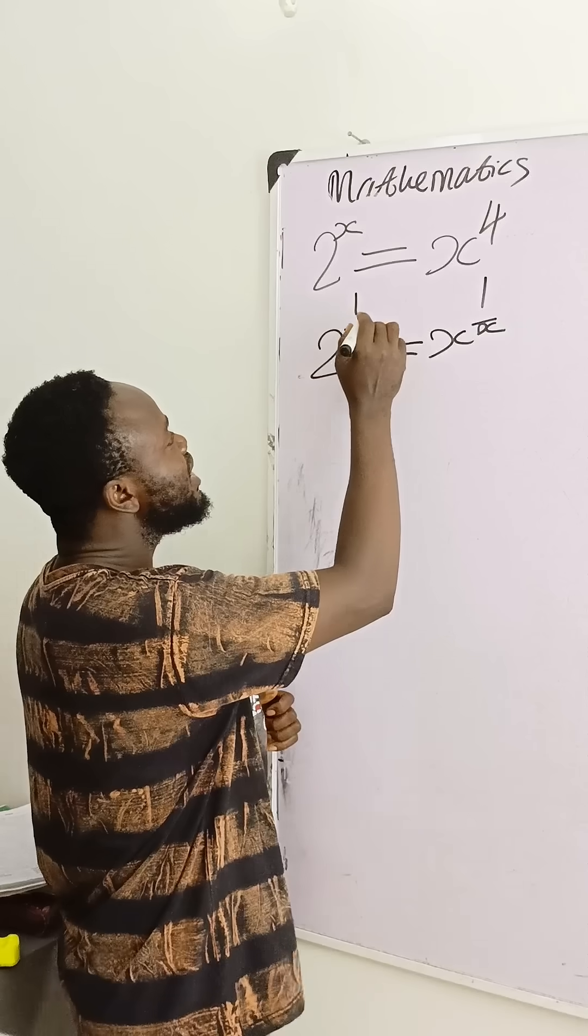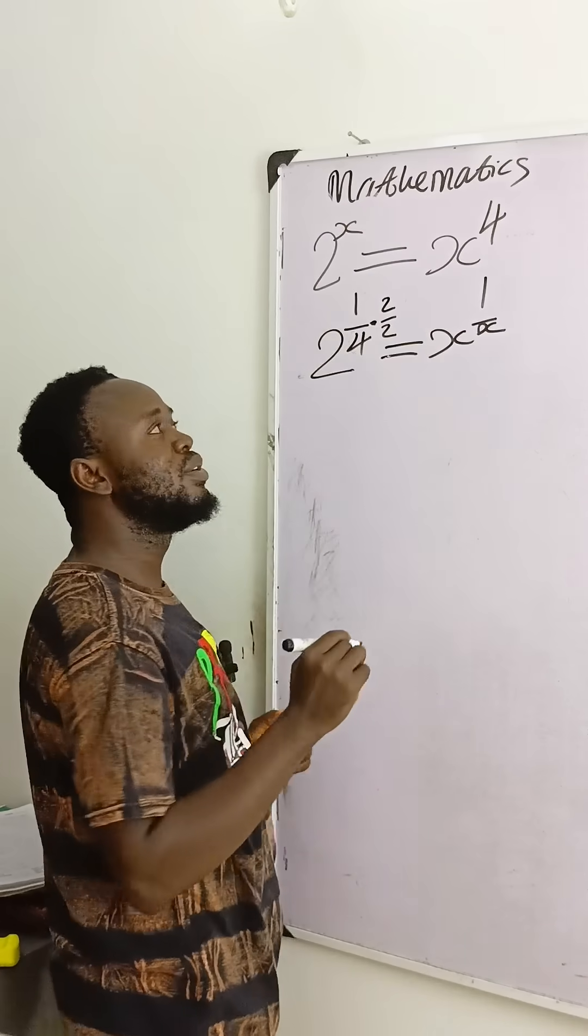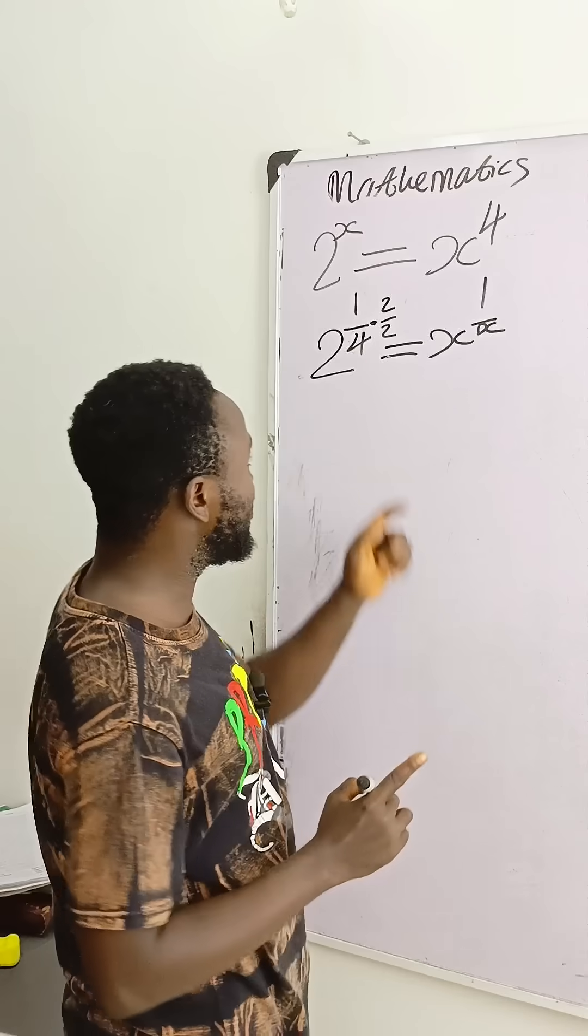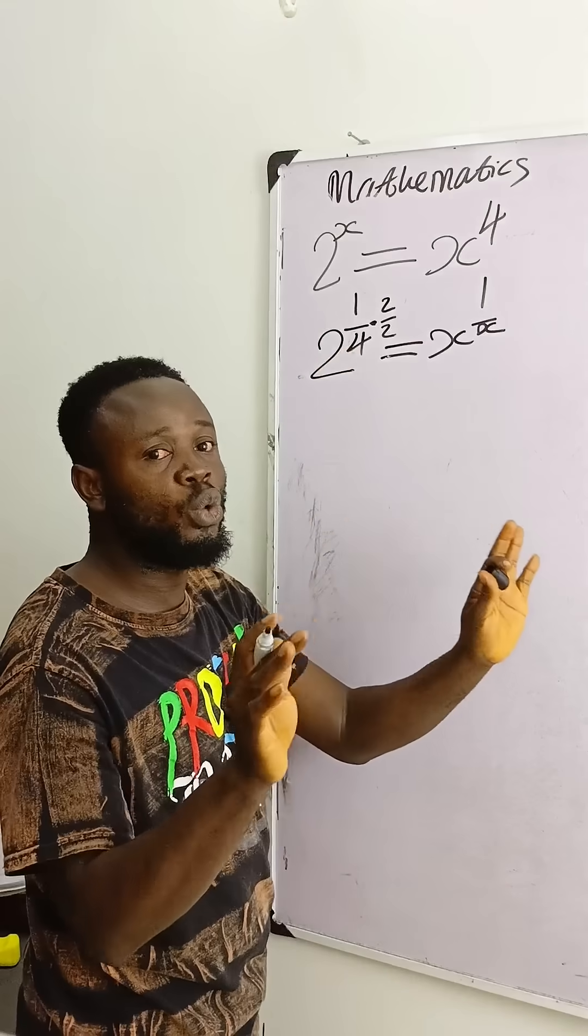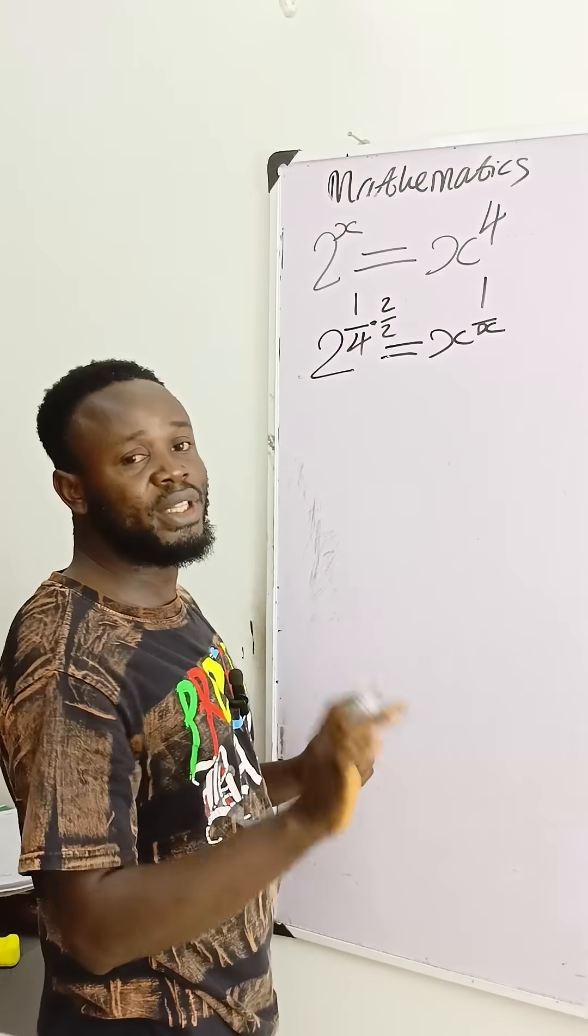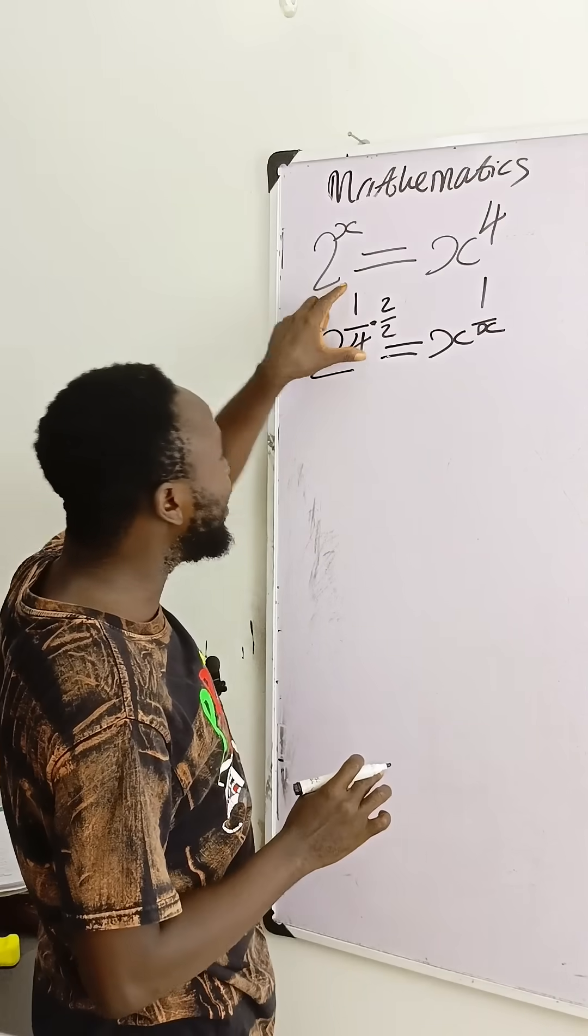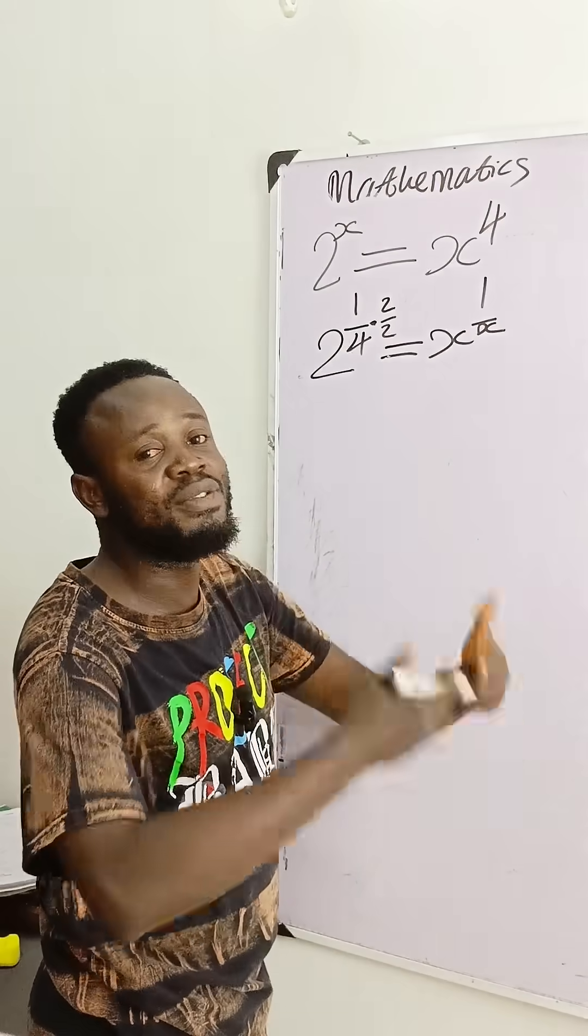Then we'll see what I'll do. If I multiply this thing by 2 over 2, don't be confused, because if I use 2 over 2 to multiply 1 over 4, the question will not change, because 2 over 2 is 1. What I did is I use 1 to multiply this side and use 1 to multiply this. If you use 1 to multiply, it's the same thing.